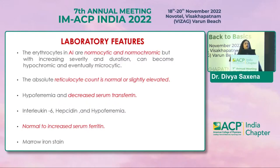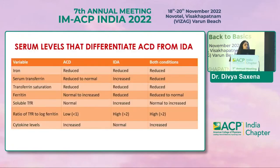The laboratory features to identify anemia of inflammation or chronic disease: it is basically normocytic normochromic, but with increasing severity and duration it can become hypochromic and eventually microcytic. There is a normal or slightly elevated absolute reticulocyte count, hypoferremia, decreased serum transferrin, elevated IL-6, elevated hepcidin, and normal to increased serum ferritin. Marrow iron stains may also be performed.